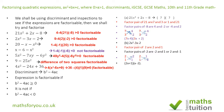So the factors for 2x squared minus 3x minus 2 are (2x plus 1)(x minus 2).